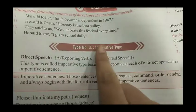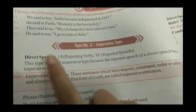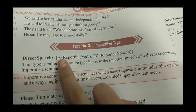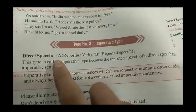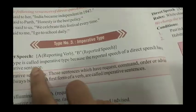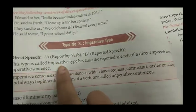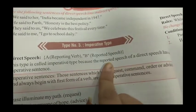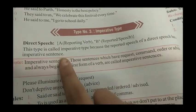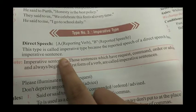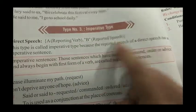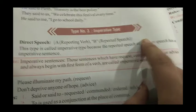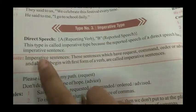Type number 3 is imperative type. Direct speech: A — reporting verb, B — reported speech. इसको हम imperative type इसीलिए बोलते हैं क्योंकि जो reported speech या direct speech के अंदर होता है वो imperative sentence होता है।